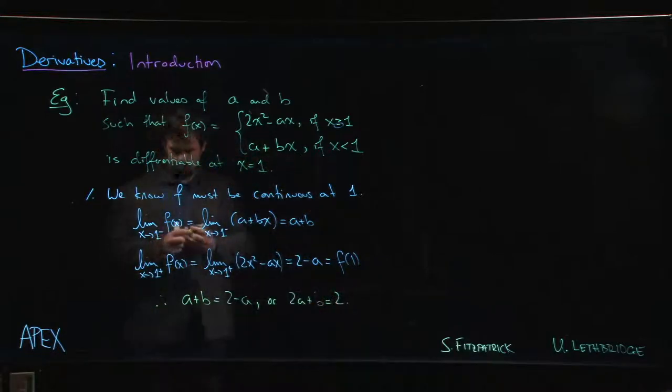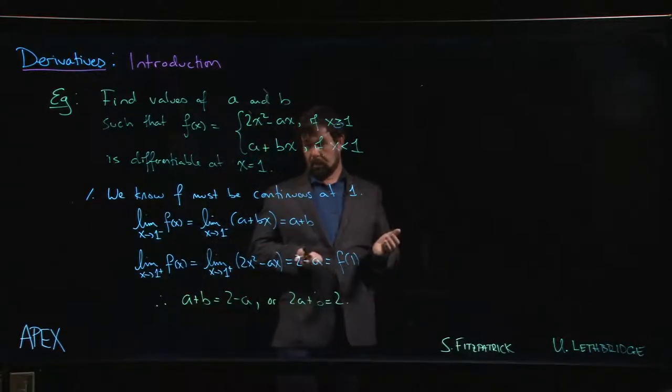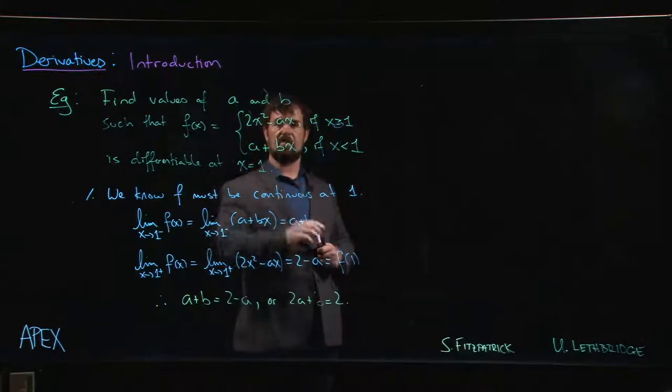Okay, well that gives us one equation but there are two unknowns. So for any value of a and b satisfying this equation we can guarantee that this graph is going to be continuous.